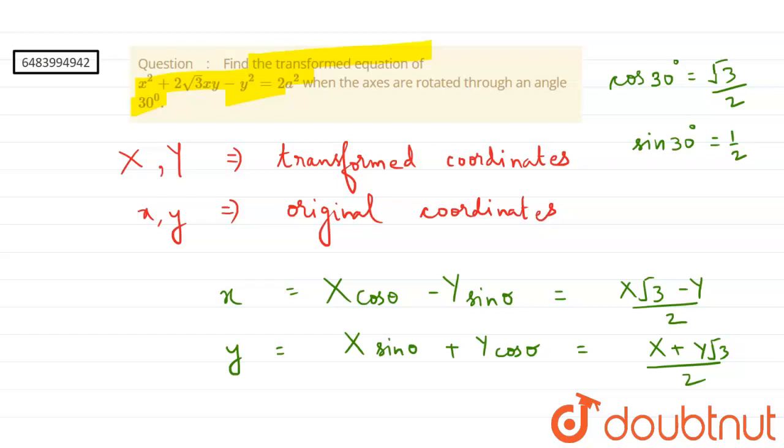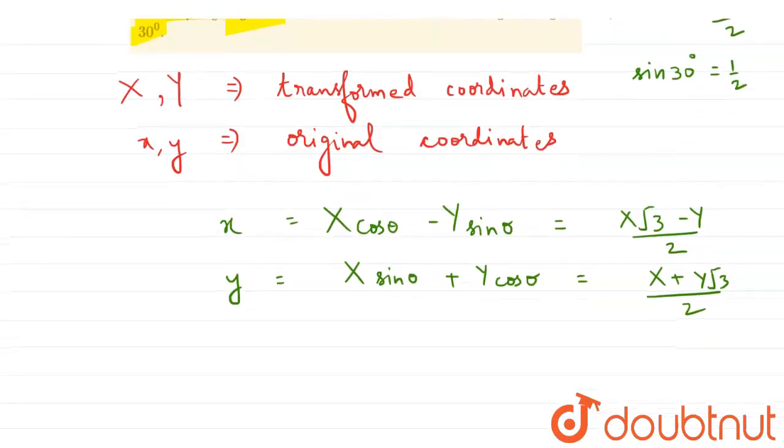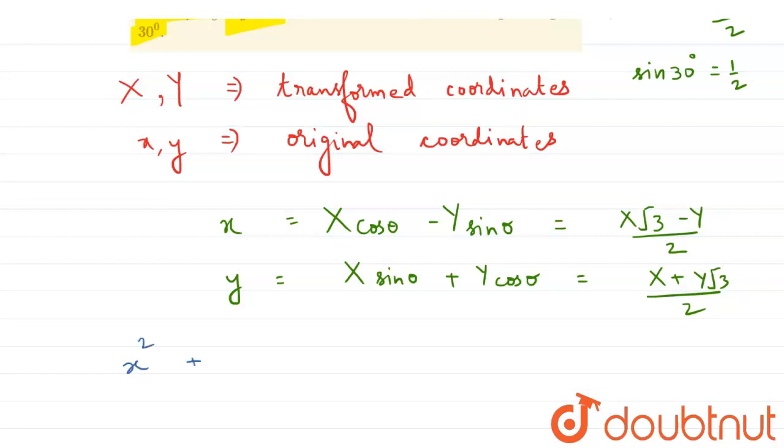So now in the equation I will substitute in place of small x comma small y, I will substitute in terms of capital X and capital Y. That's how I will get my transformed equation.